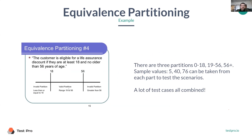That's why we just pick one number — any random number between zero and 18, let's say five, for example — and we test that number, assuming that the rest of the numbers within the same partition will behave the same.